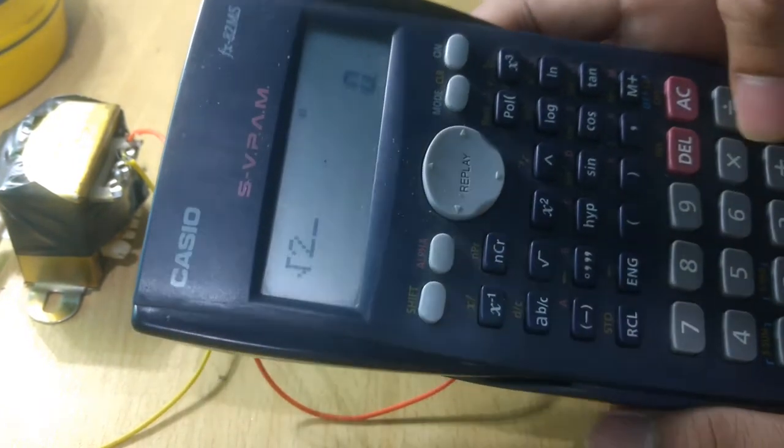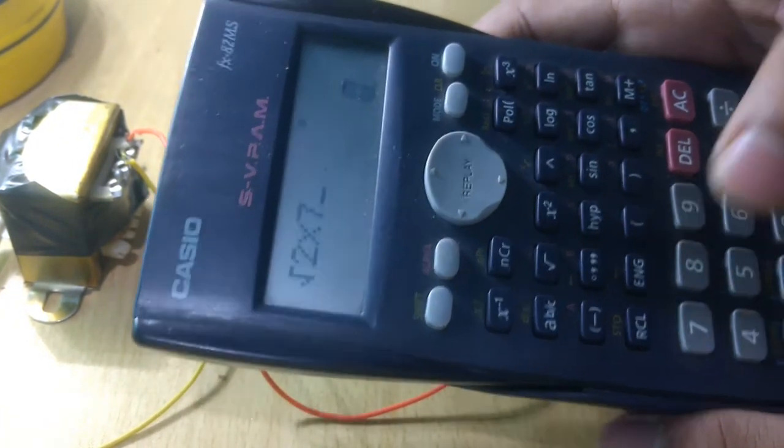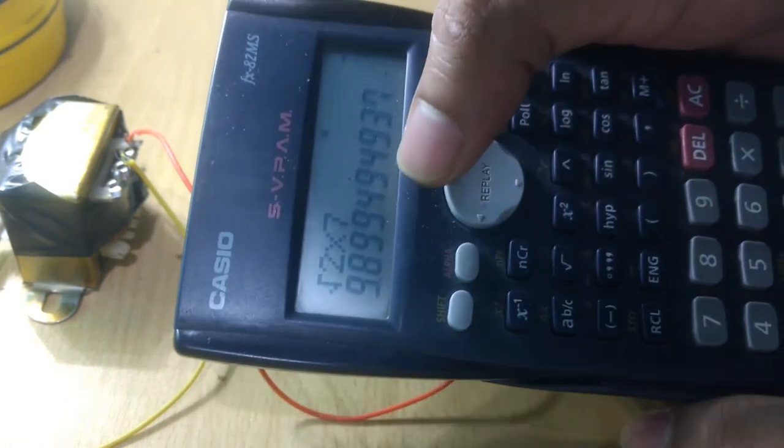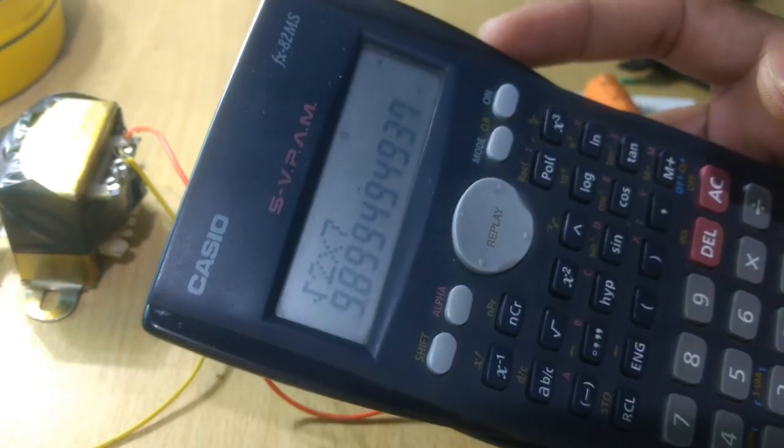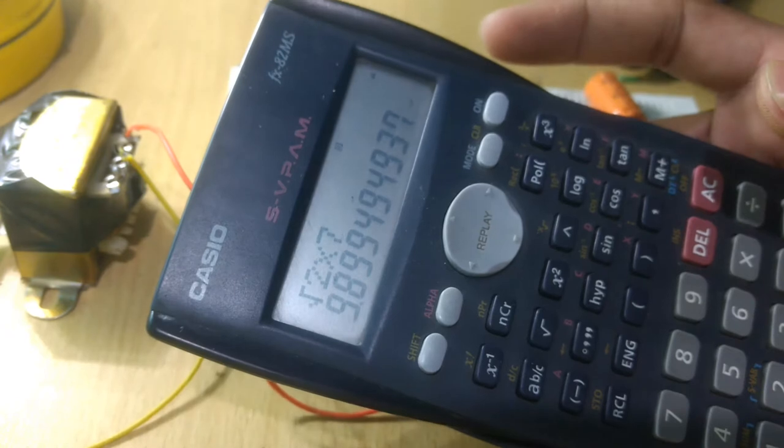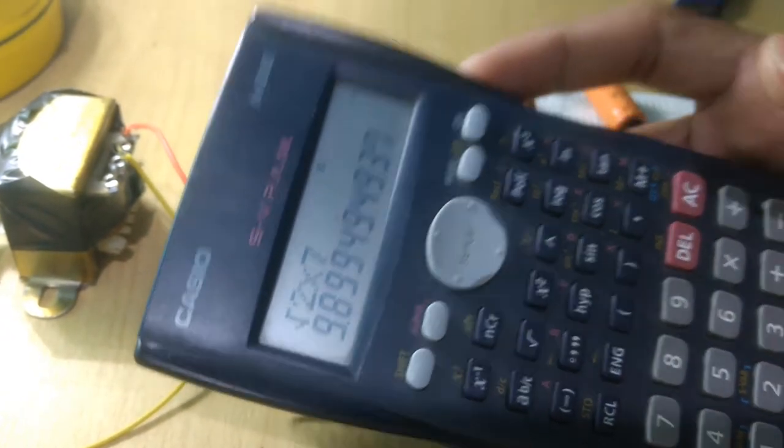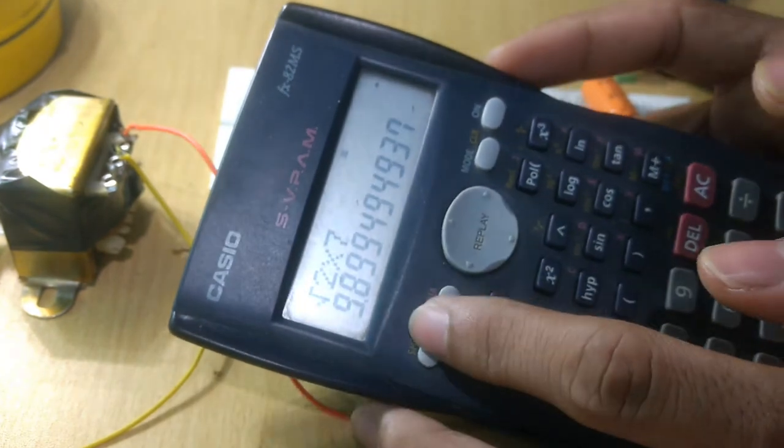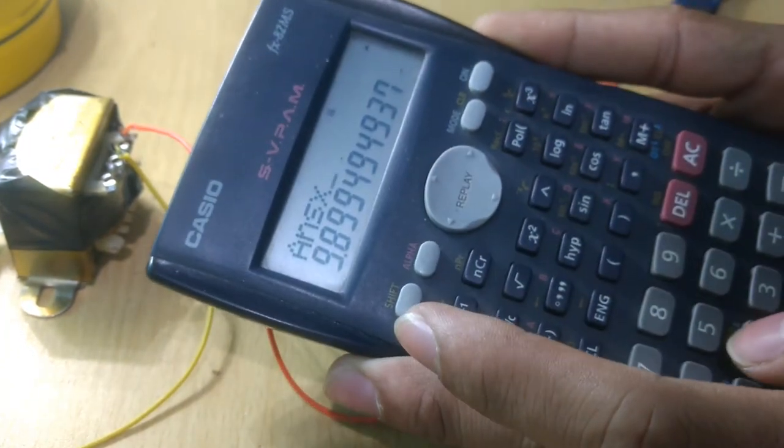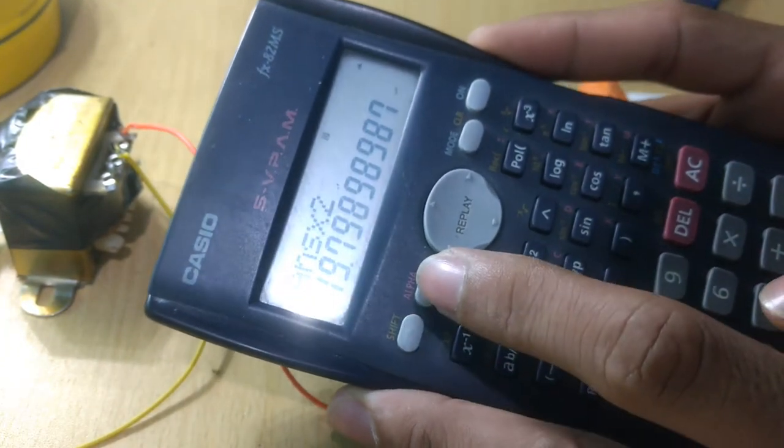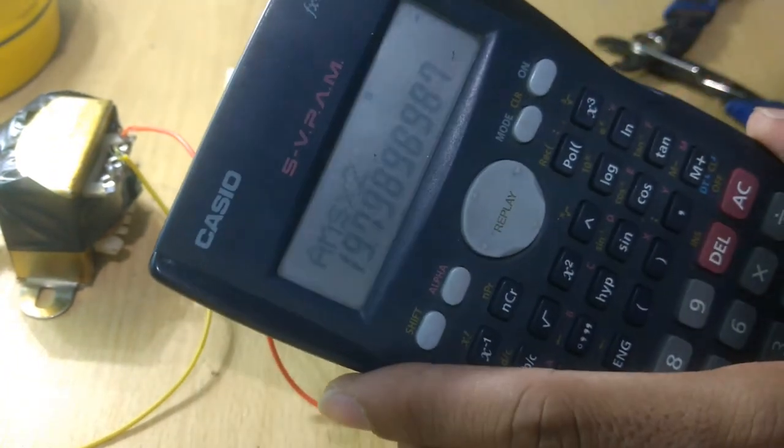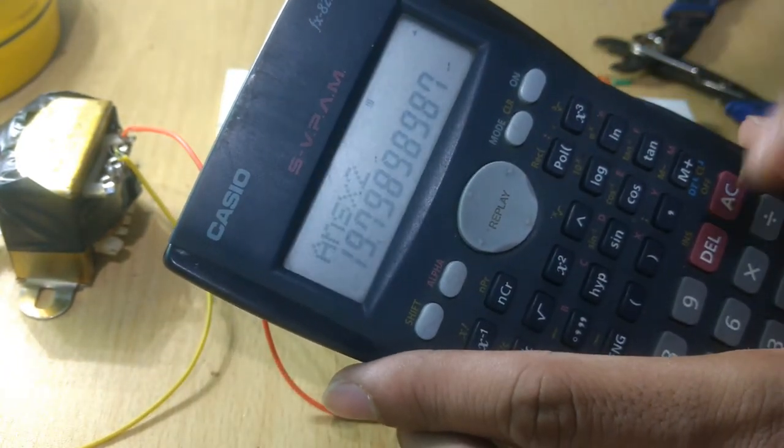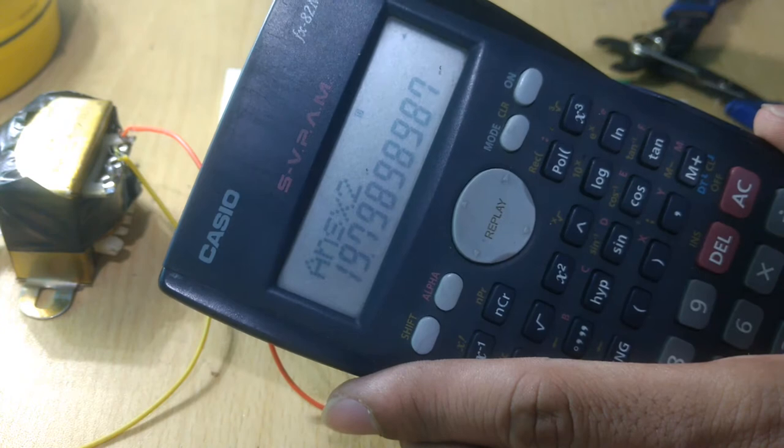So root 2 multiplied by 7 is 9.89. If we make a voltage doubler, say half or full wave, we will obtain twice the value of this, so times 2. The output DC of this voltage doubler must be 19.79 or something like that.